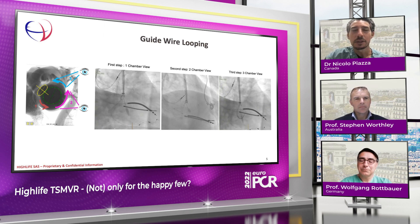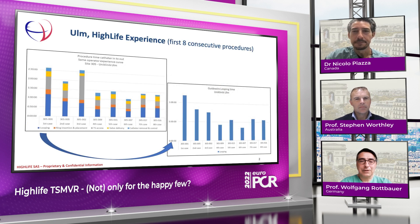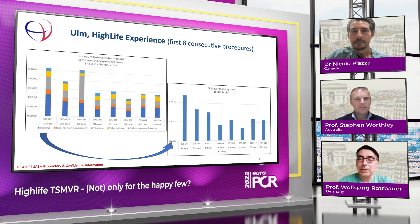Nicolo asks Wolfgang about his experience with looping and his learning curve. Wolfgang explains: it seems to be a very complicated but actually very structured process. In our first case the looping time was one and a half hours, and we got it down to maybe 10 to 30 minutes depending on the patient. Once the procedure was structured well, there's a very steep learning curve and very short intervention time.